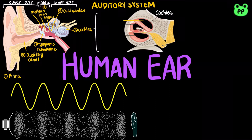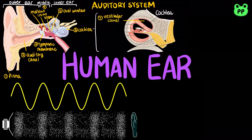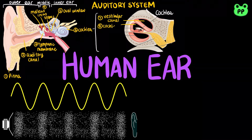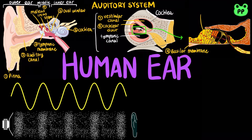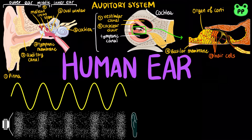These vibrations create pressure waves in the fluid in the cochlea that travel through the vestibular canal, pushing against the cochlear duct. The floor of the cochlear duct, called the basilar membrane, bears the organ of Corti, which contains mechanoreceptors of the ear known as hair cells, with hairs projecting into the cochlear duct.